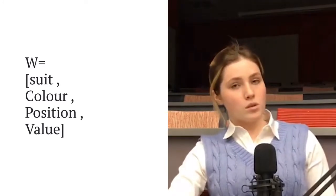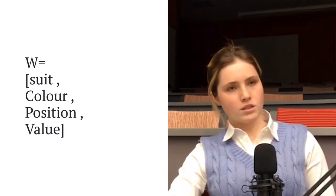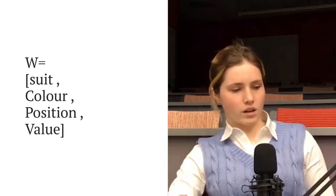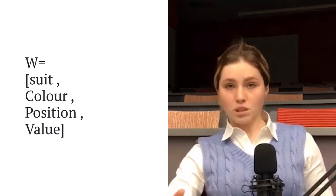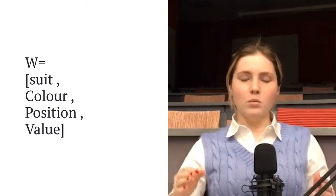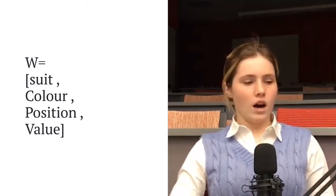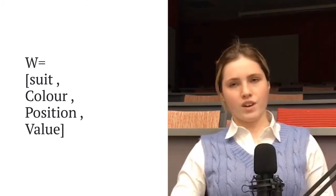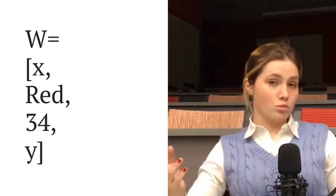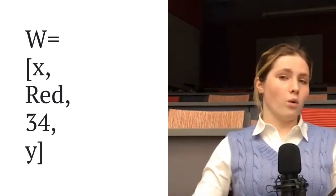Say we wanted to model a specific playing card using Hilbert space. We have four properties, so we're going to set up a vector with four components: suit, color, position, and value. Let's say we don't know what its suit is, so suit is going to be x. We know its color is red, we know its position is 34, and we don't know its value — that's going to be y.